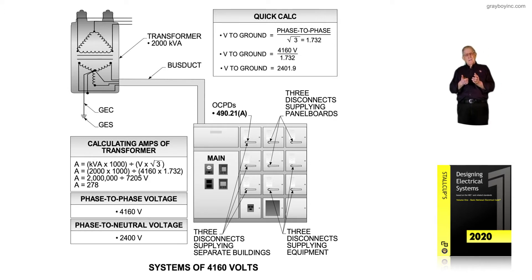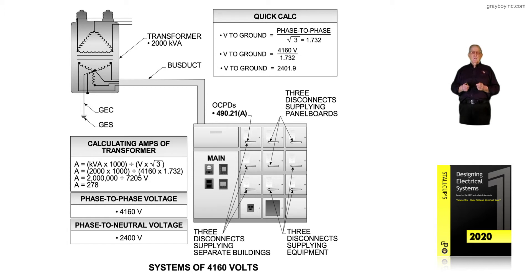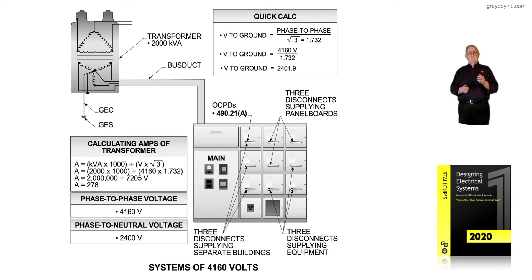Certain types of equipment use that type of voltage. We're usually using this voltage in a large industrial-type facility. When we do the math in calculating the amps, we take 4160 times the square root of 3...